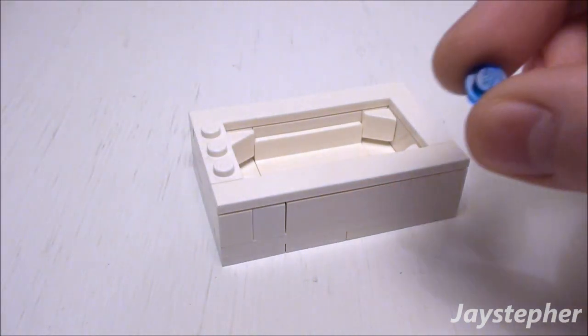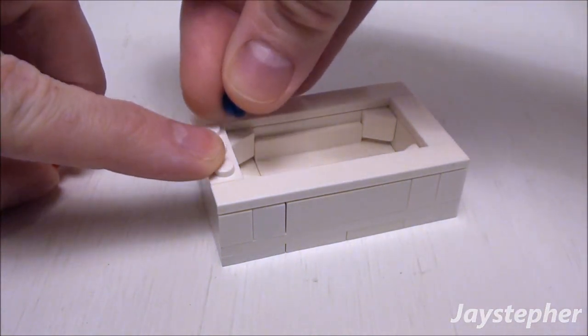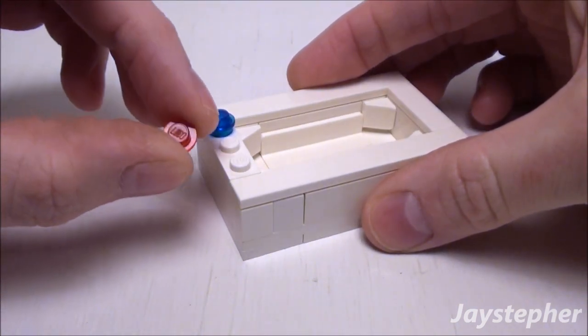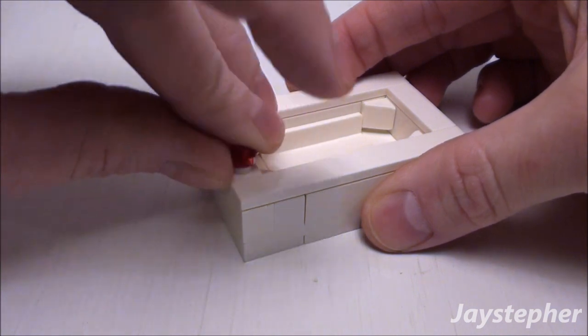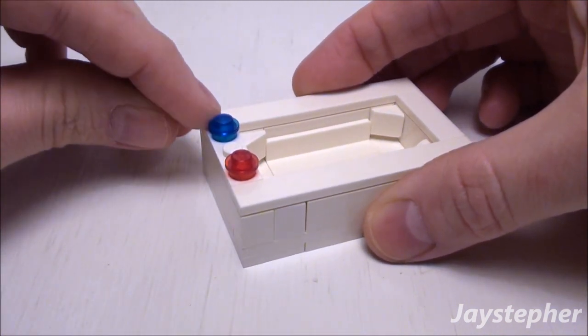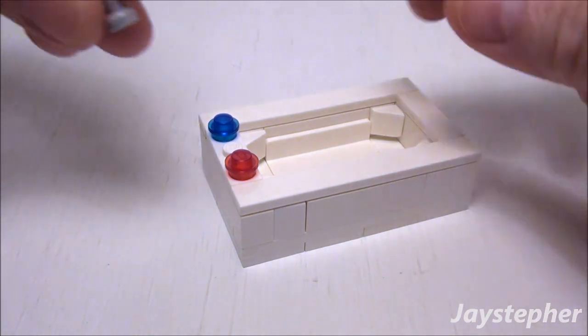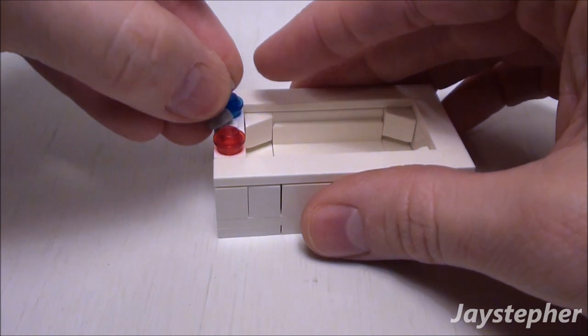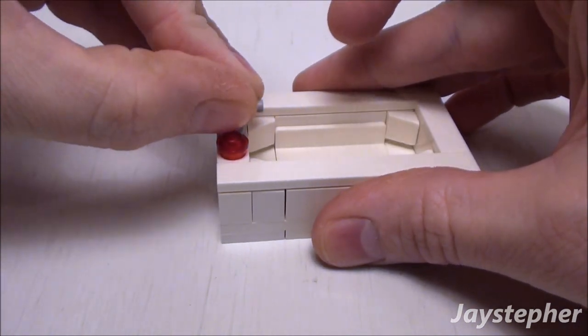Now use a transparent dark blue stud and place it on the top stud like so, and a transparent red stud on the bottom. This is going to be the cold and hot water valves. Followed by one tap, place it on the remaining stud. Now we have a faucet.